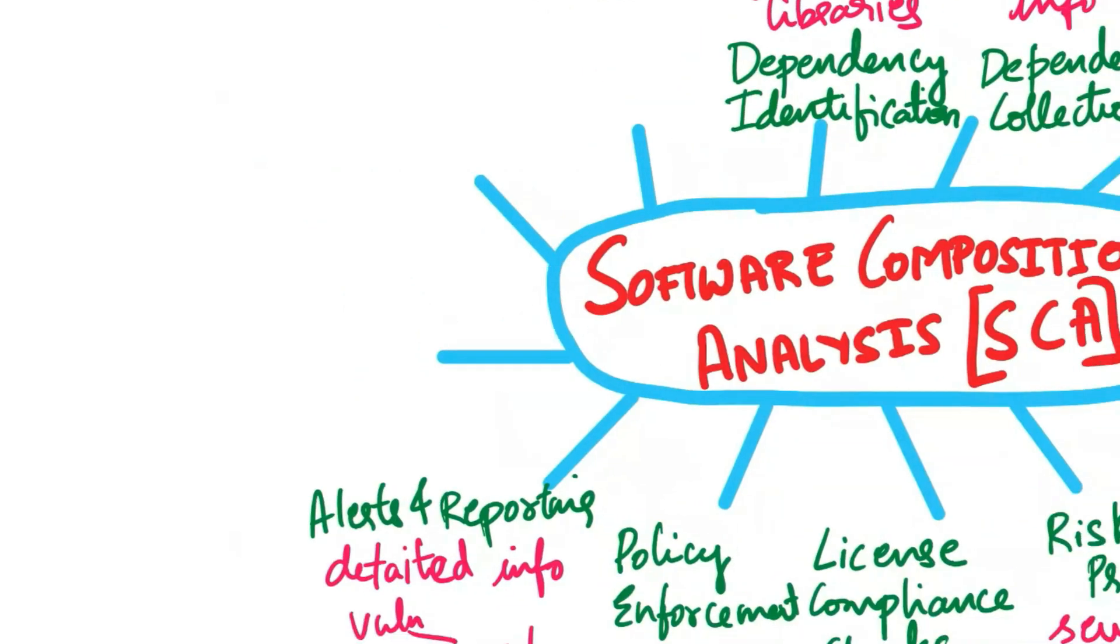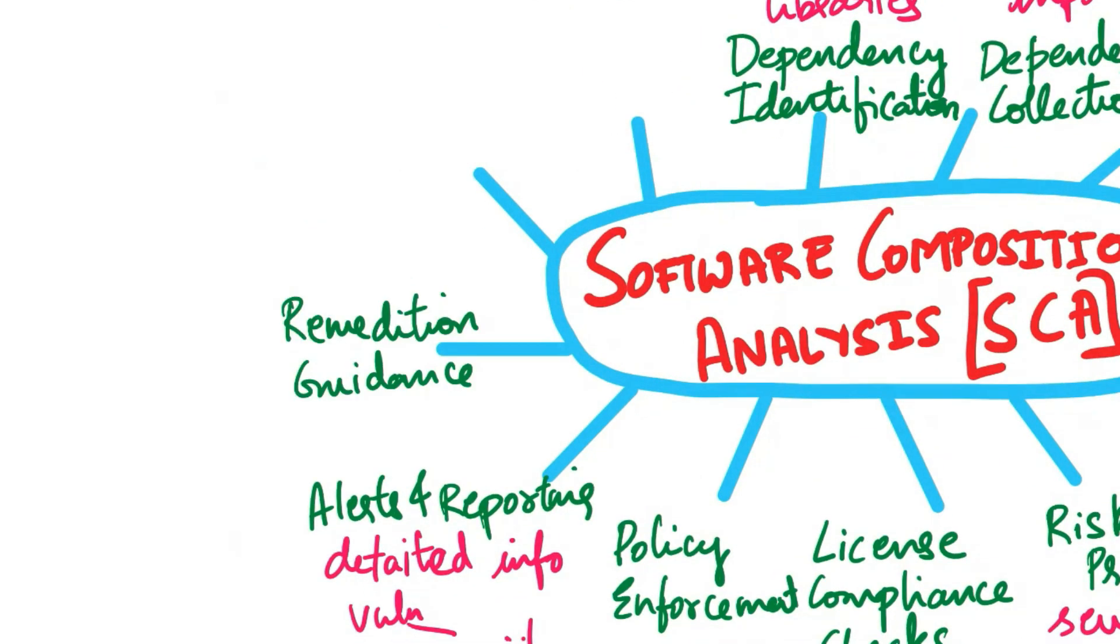Next is remediation guidance. SCA tools often offer guidance on how to remediate identified vulnerabilities and compliance issues. This guidance may include steps to upgrade to a secure version, apply patches or use alternative components.